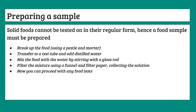Then transfer the food to a test tube and add distilled water. Mix the food with the water using a glass stirring rod, then filter the mixture using a funnel and filter paper, collecting the solution. Now you can proceed with any of the food tests. Remember: you cannot do a food test on a whole solid food — you need to prepare the food sample first.